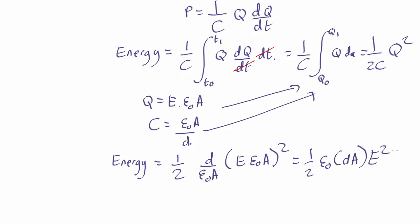So what that tells us is that the energy per unit volume is just 1 half epsilon naught E squared for an electric field.